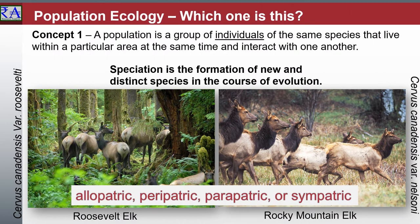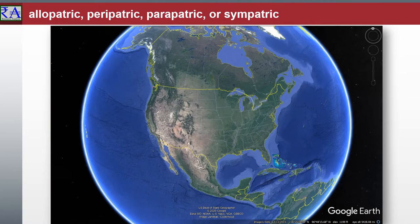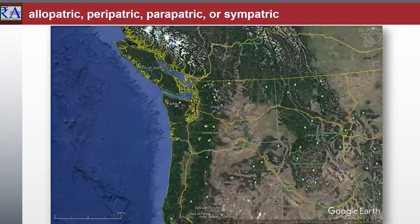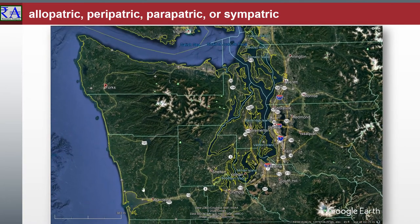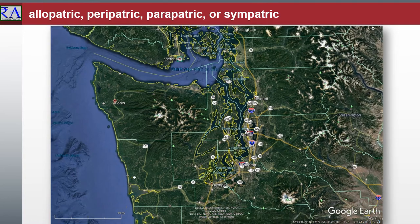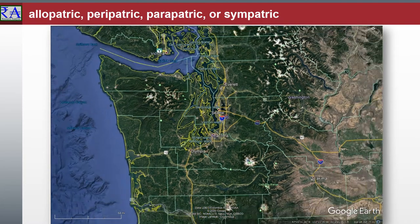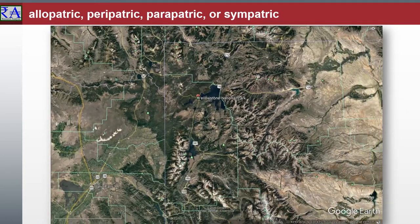Throughout this speciation series, we have been looking at these chubby and happy Roosevelt elk, Cervus canadensis variety Roosevelti on the left side screen, opposing the Rocky Mountain elk, Cervus canadensis variety Nelsonii. Members of the genus Cervus are descendants of Cervus genome first appearing in the fossil record 25 million years ago, during the Oligocene epoch in Eurasia, but they do not appear in the North American fossil record until the early Miocene, about 23 million years ago. Think about the current Ice Age that started about 34 million years before present.